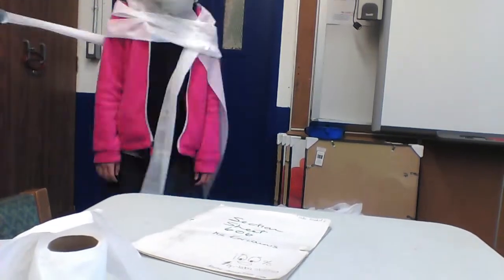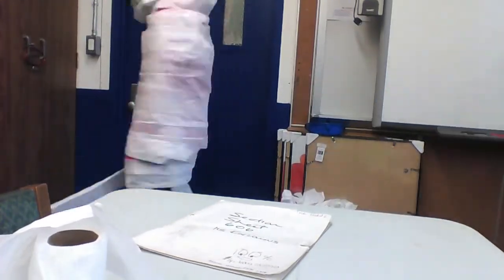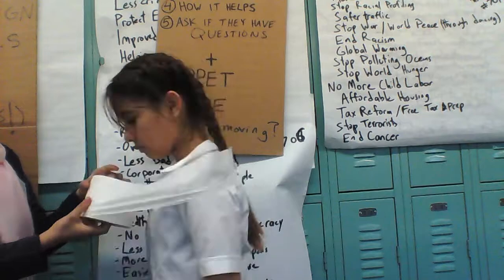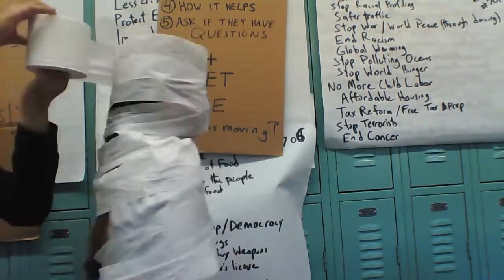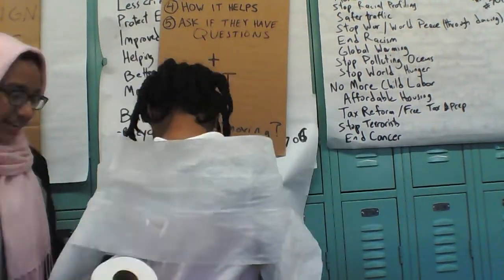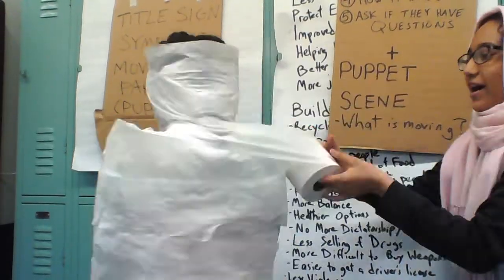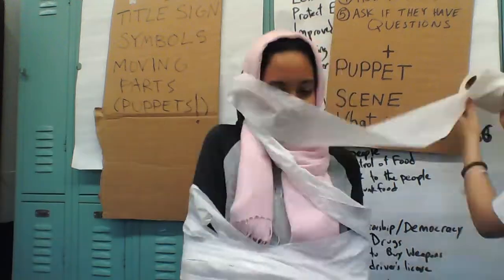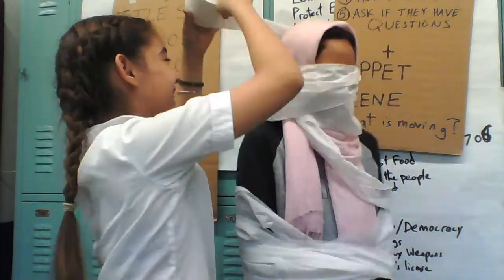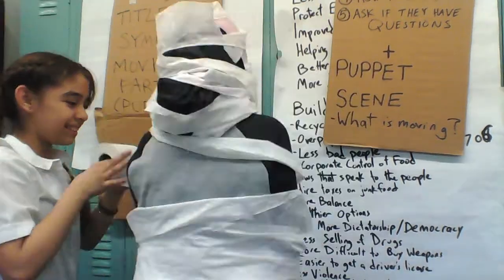Step one of mummification: announcement of the death. A messenger was told to inform the death of the mummy. Step two, embalming the body. Step three, removal of the brain. Step four, internal organs removed. Step five, drying the body out. Step six, wrap the body in linen. Step seven, final procession.